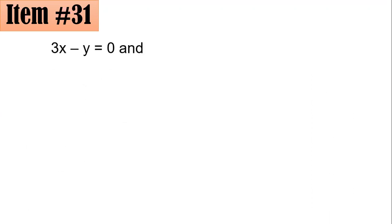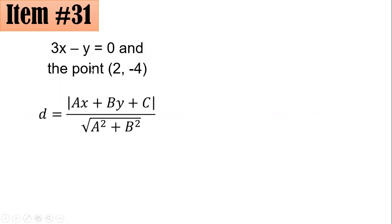To solve this, we have to remember the given and recall that to get the distance between a line and a point not on the line, we utilize the formula: d equals the absolute value of the quantity ax plus by plus c, all over the square root of a squared plus b squared.